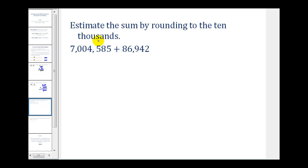On this example, we want to estimate the sum by rounding to the nearest ten thousands. We'll first identify the round-off place value. That would be this zero and this eight.